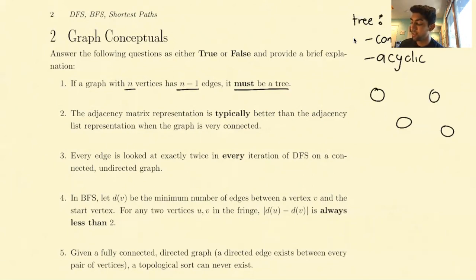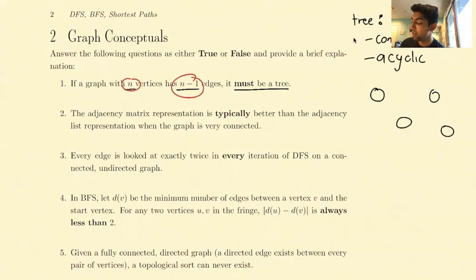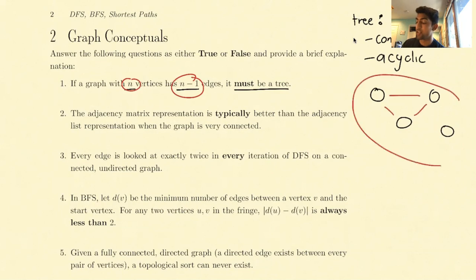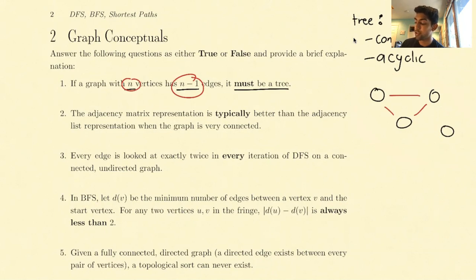It says that if a graph with n vertices has n-1 edges, it must be a tree. Well, if a graph has n-1 edges, it may look like this, in which case it's not necessarily a tree, because it's not fully connected. In order to make this claim true, we need: if a graph has n-1 edges and it is connected, then it must be a tree.